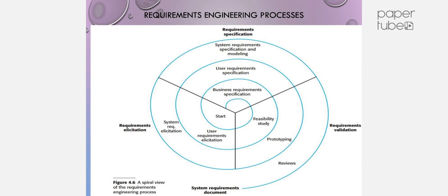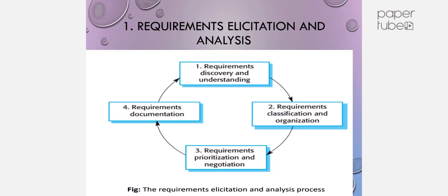This is the spiral view diagram of the process. Requirement Elicitation consists of four stages.